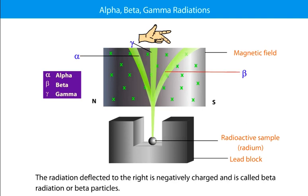The radiation deflected to the right is negatively charged and is called Beta radiation or Beta particles.